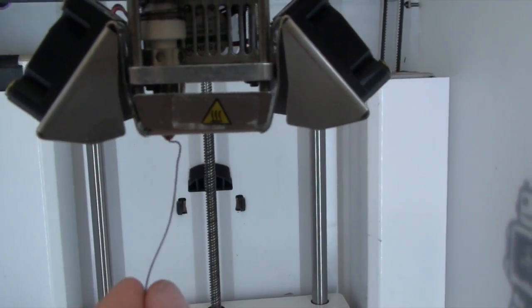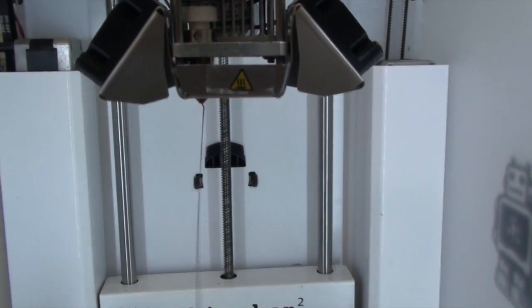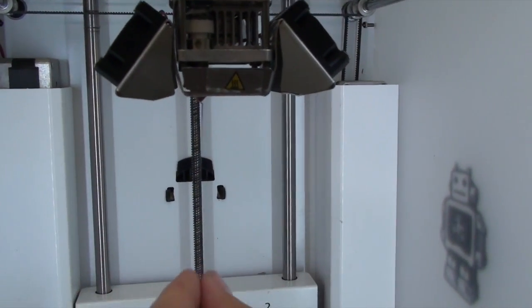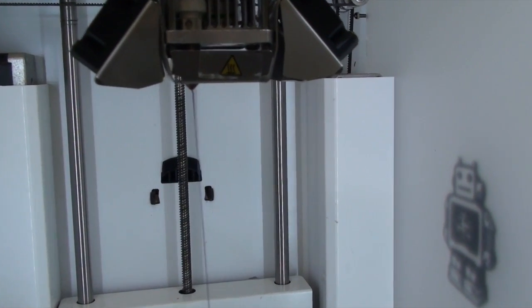And that new filament will start to extrude. Right, and there you go. You can see the first little bit coming out. It's coming out red to start with, which is just the old color. And you want to keep it going until you get a nice steady flow of the new.